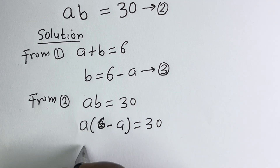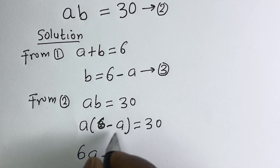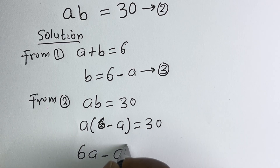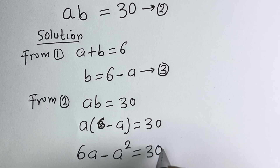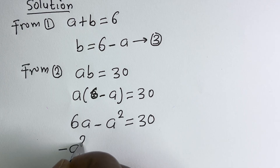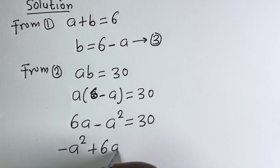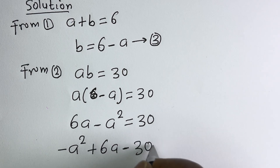A multiplied by 6 gives 6A, minus A multiplied by A gives A squared, so 6A minus A squared is equal to 30.